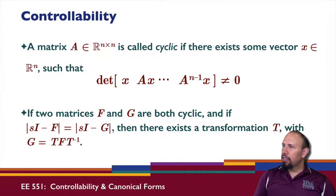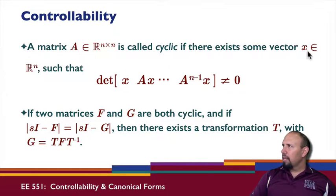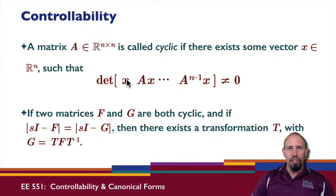In looking at the subject of controllability and canonical forms, we need to talk about something called a cyclic matrix. A matrix A is said to be cyclic if there's some vector x in Rn, not zero, such that the determinant of this matrix is equal to zero. This matrix looks like a controllability matrix. In fact, it is a controllability matrix, if B is single input for a single input system, and B is x here. So if there's some non-zero x such that this is satisfied, then our matrix is cyclic.